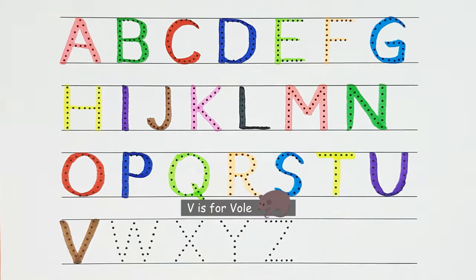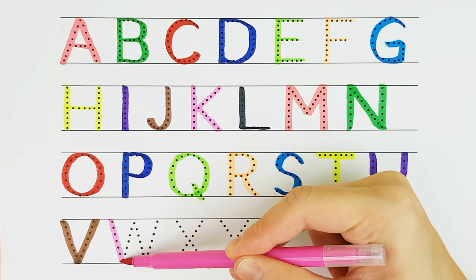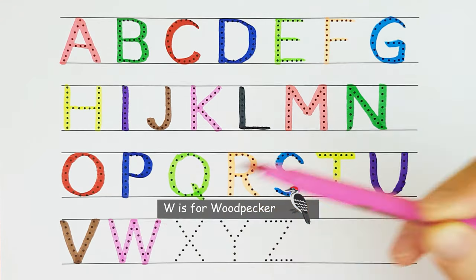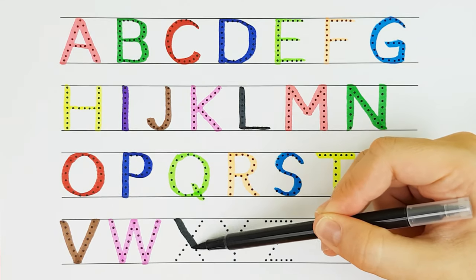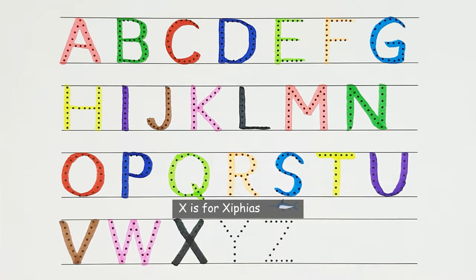V. V is for Vulture. V. W. W is for Woodpecker. W. X. X is for Xiphias. X.